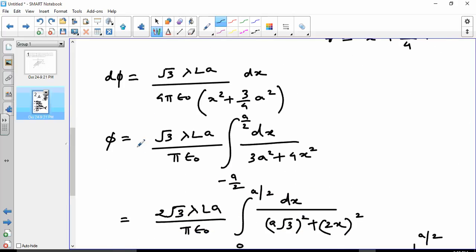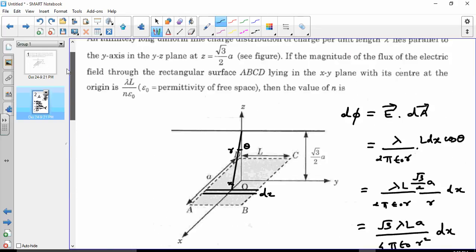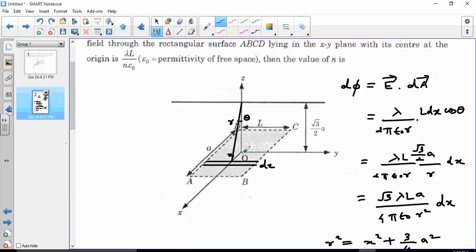And then we integrate this. Limits of integration would be from here to here. That means minus a by 2 to a by 2.